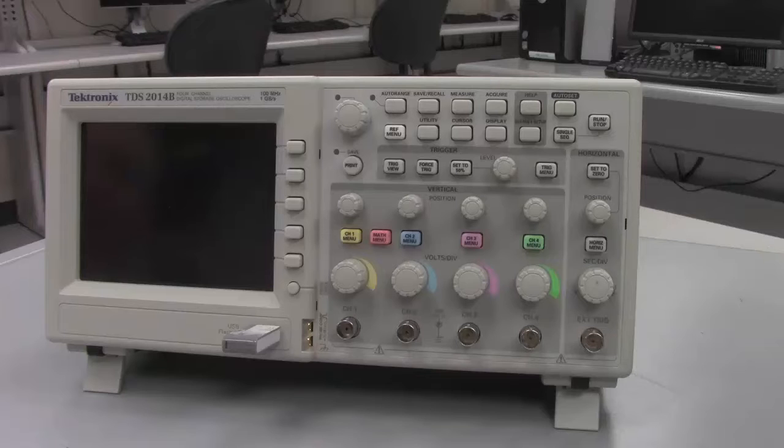It's a four-channel oscilloscope, which means it's capable of displaying four different signals at the same time. It's known as a 100 megahertz scope, which means it can analyze and work with signals up to 100 megahertz in frequency. In order to accomplish that, it samples at 1 billion samples, or 1 giga sample, per second.